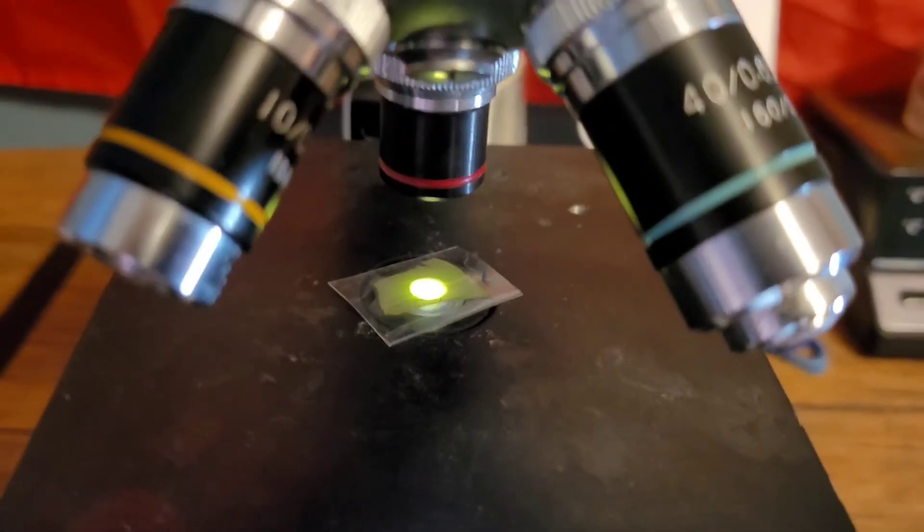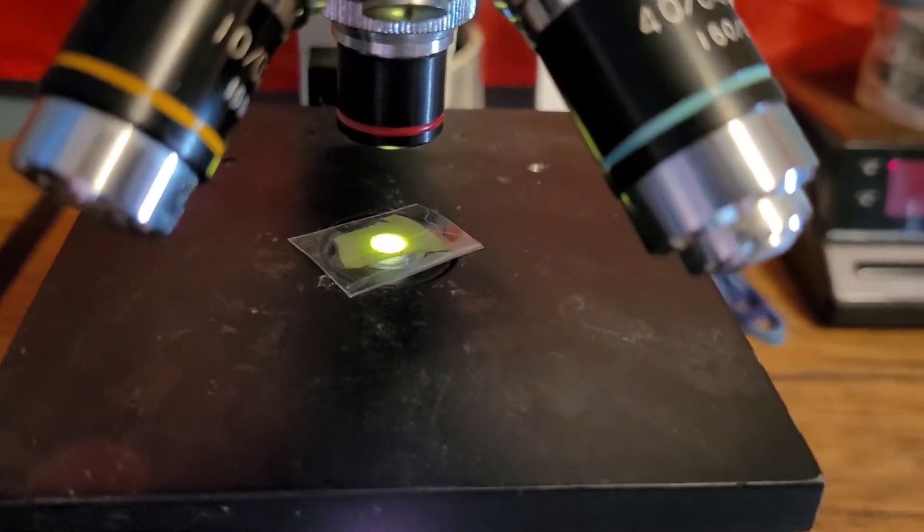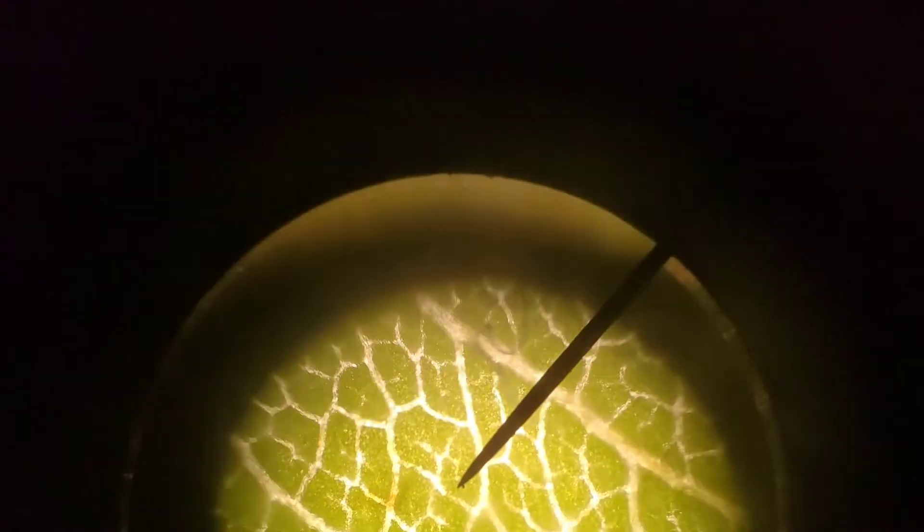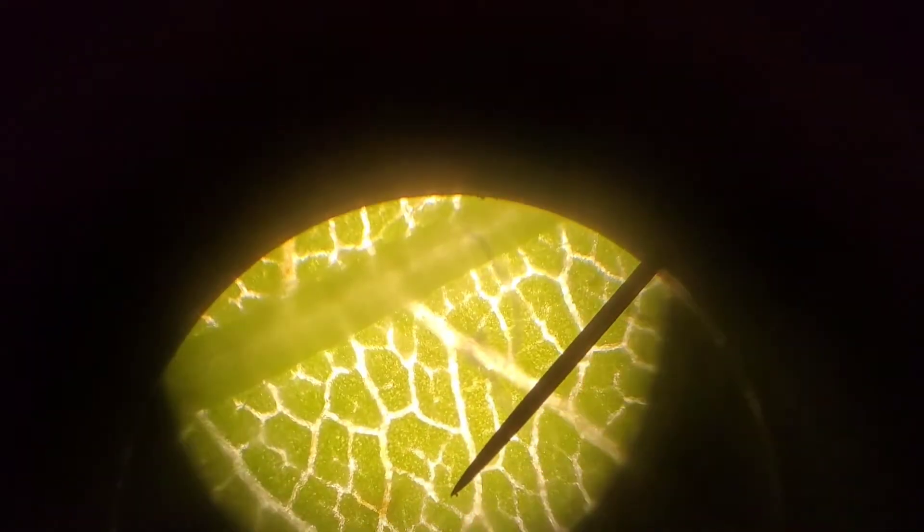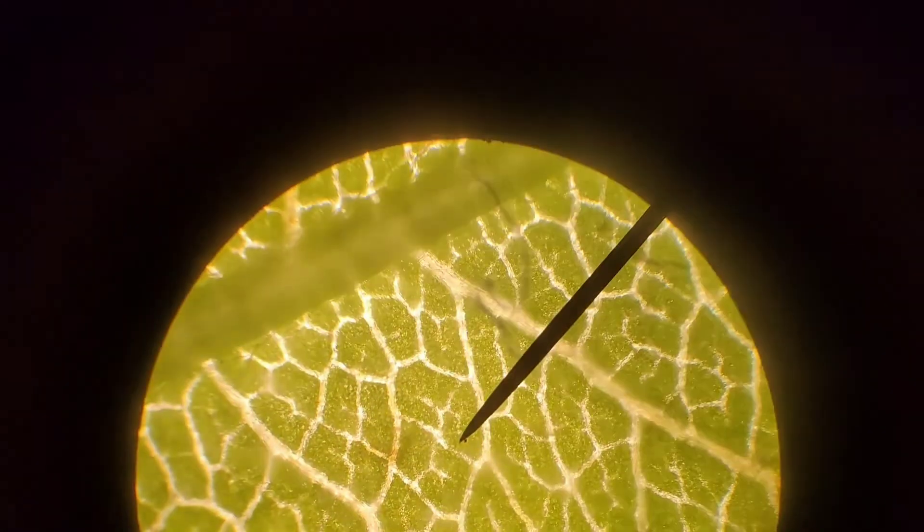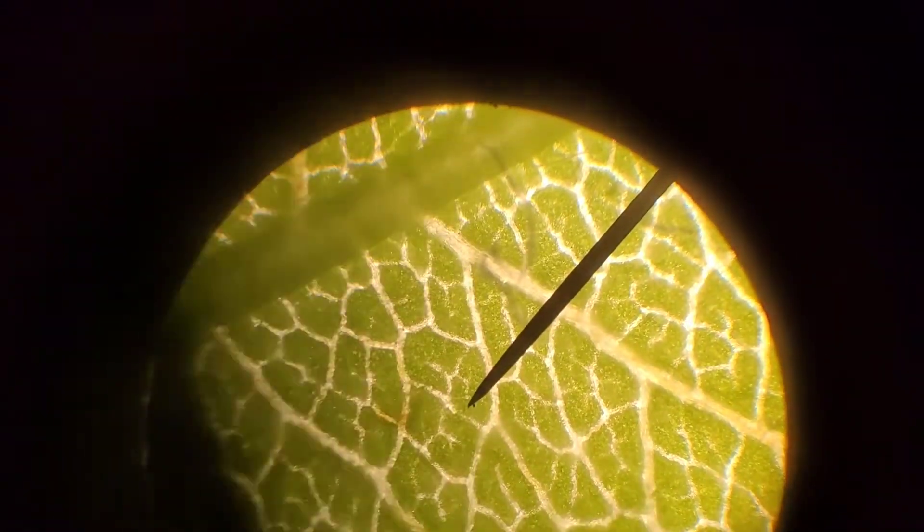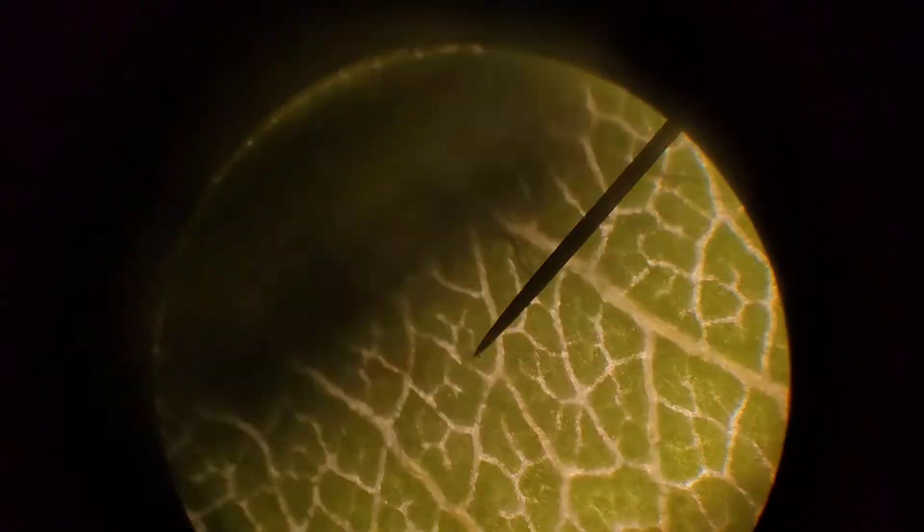Alright here's leaf two, this is part of a dandelion leaf. So here's the second sample. You can see the stem over there in the corner. There's like a hair on the screen, or on the leaf, a little bit of debris I guess.